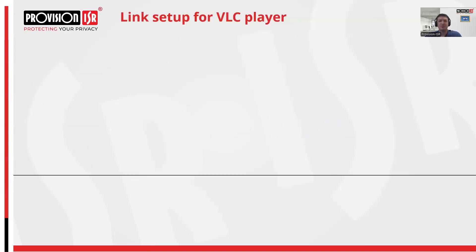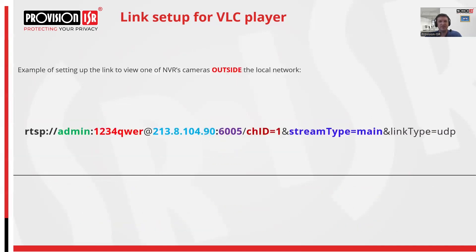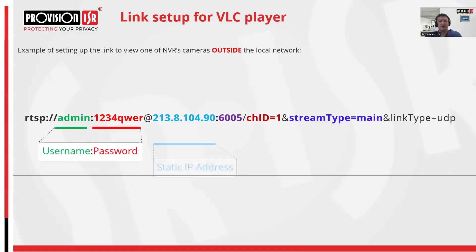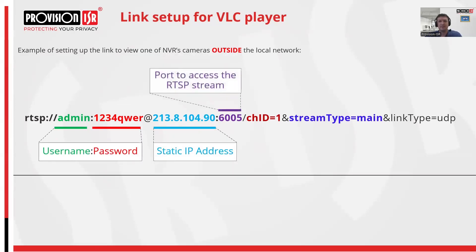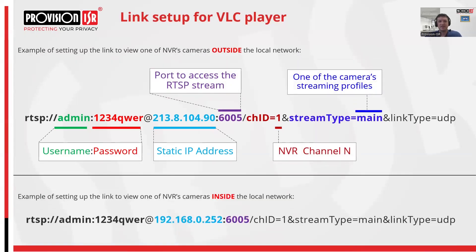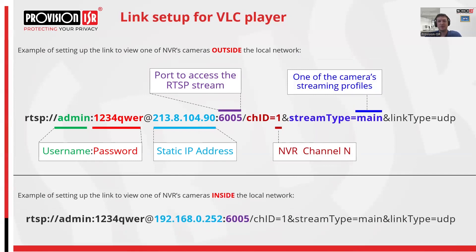Now let's explore how to construct the RTSP link to access a specific channel on an NVR via VLC Player. In the first example, when accessing an NVR located outside our local network behind a router with a static IP address, begin with the username and password credentials of the NVR. Follow with the router's static IP address and RTSP port, then specify the channel number, and finally conclude with the quality type. If accessing the NVR within our local network, simply replace the router's static IP address with the NVR's local IP address.